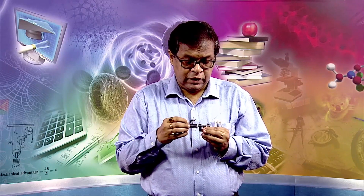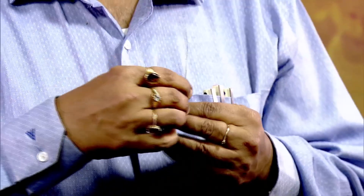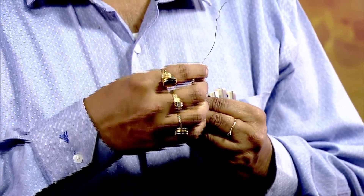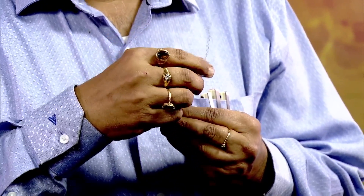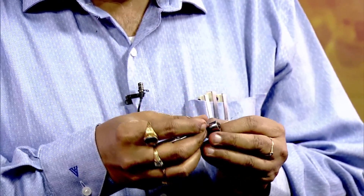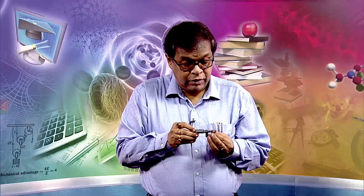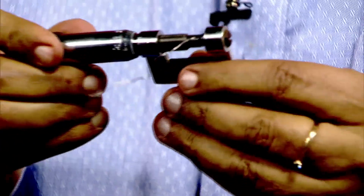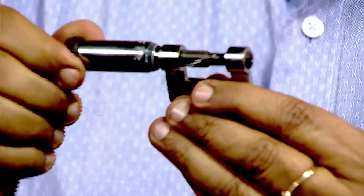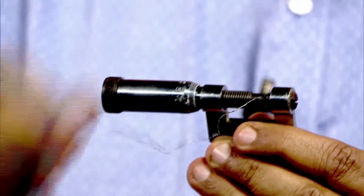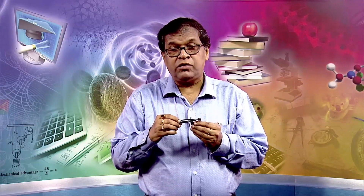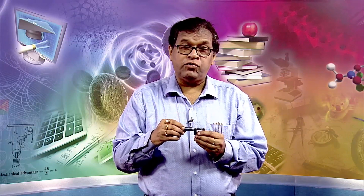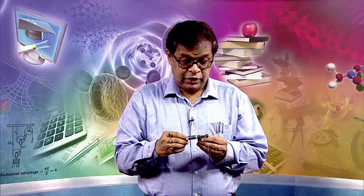Now we come to the actual part of the experiment: measurement of the diameter of this wire. As mentioned earlier, the wire may not be uniform throughout — it has non-uniformity. So the measurement has to be done at several places. You hold it between the two jaws; I have kept it between the jaws and then, with the help of the circular scale, made it stand tight. The length to be measured — that is, the diameter of the wire — is between the jaws, so the length between the jaws is equal to the diameter of the wire.